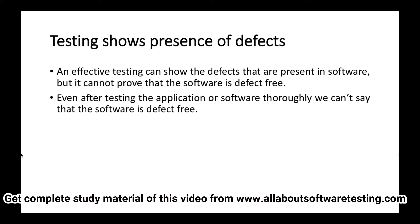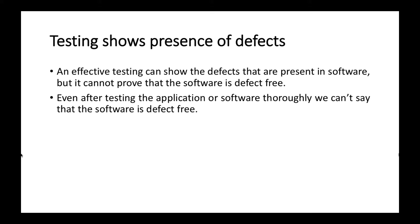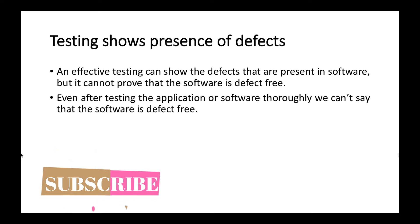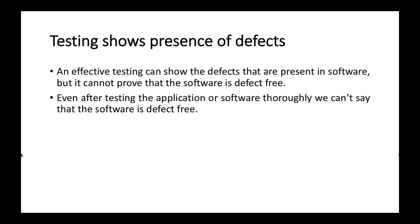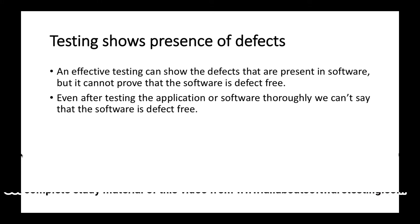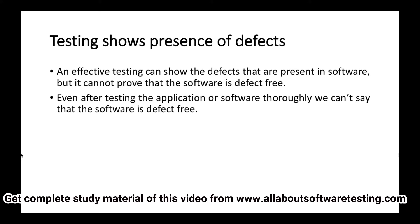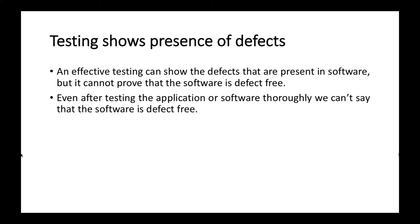Even after testing the application or software thoroughly, we cannot say that the software is defect free. Testing can show the presence of defects in the software, but it cannot prove that the software is defect free. After testing thoroughly, it is not a proof of correctness of the software. Testing is a process in which we get the defects, and after performing testing we must say that the defects present now are very much less than before.